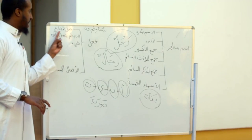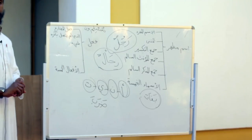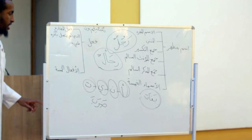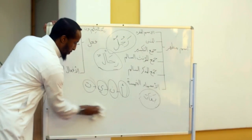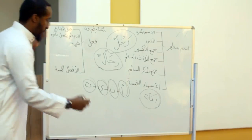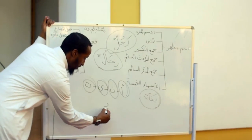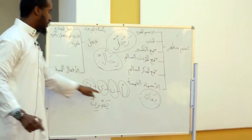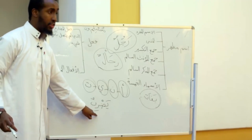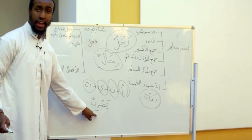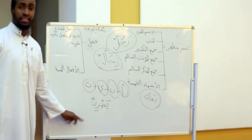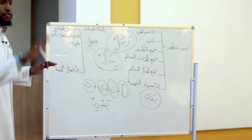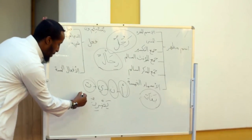The author says: Fi'l al-Mudari' — what does it mean? اَلَّذِي لَمْ يَتَّصِل بِآخِرِهِ شَيْء — that which nothing has connected to its ending. For example, the word yadribu — because I put the ya' from the za'id al-arba', so it's a Fi'l al-Mudari'. Is yadribu a Fi'l al-Mudari' al-ladhi lam yatasil bi-akhirihi shay? Yes it is.